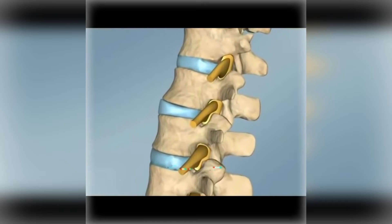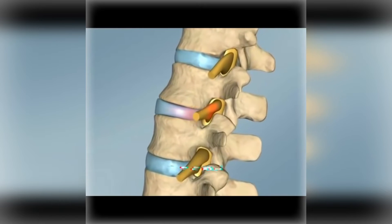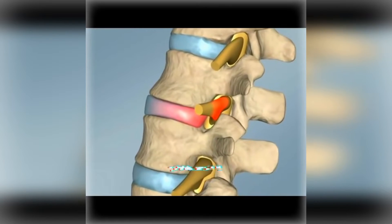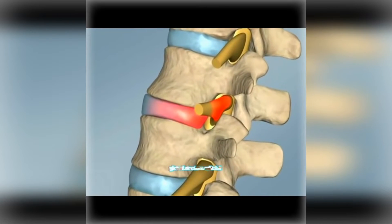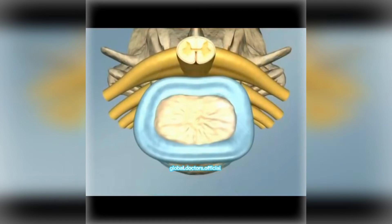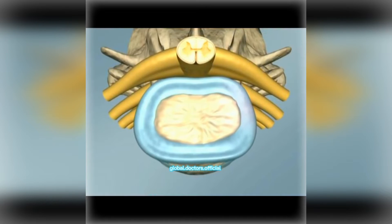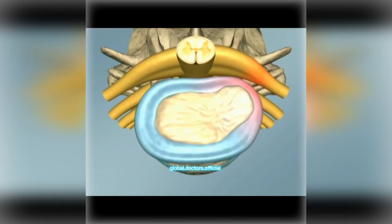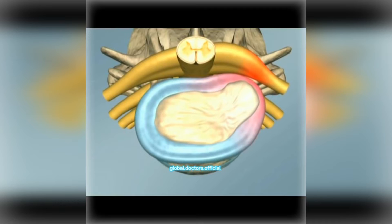Back pain is frequently caused by a bulging of the lumbar disc, which normally acts as a cushion between the vertebrae of the lower back. Due to injury or natural aging, the disc wall or annulus can begin to degenerate, allowing the center or nucleus of the disc to expand, creating a bulge.